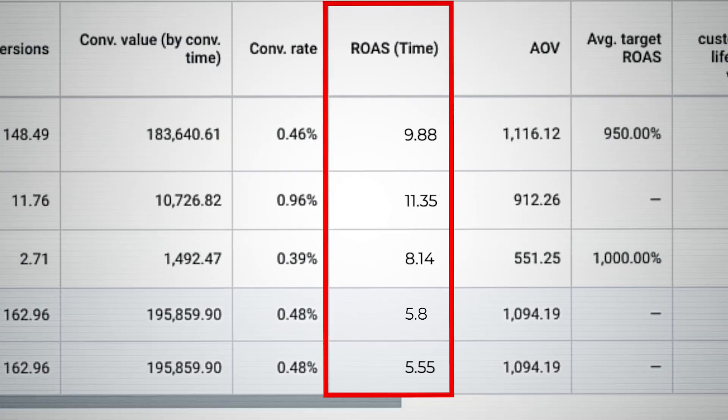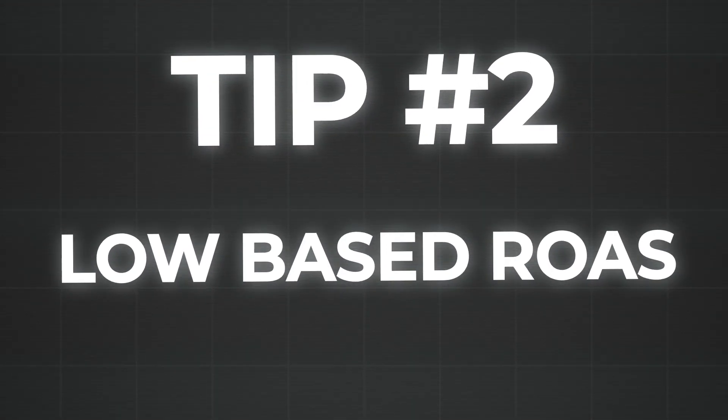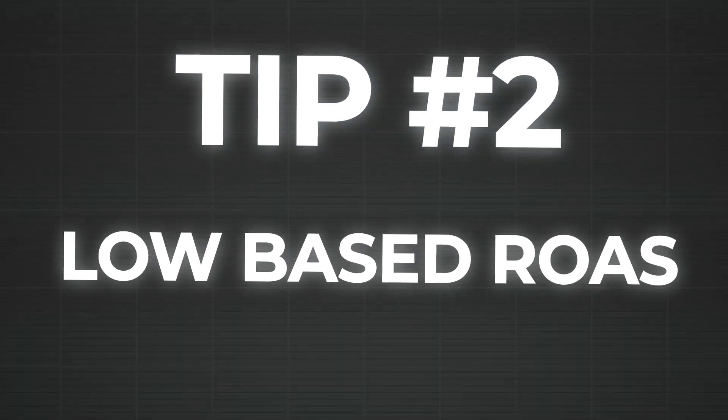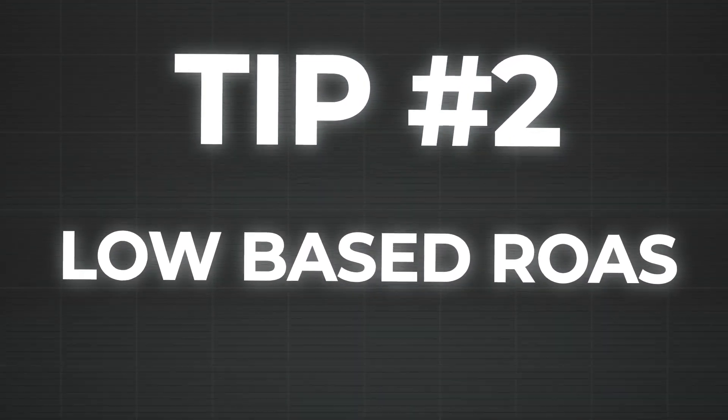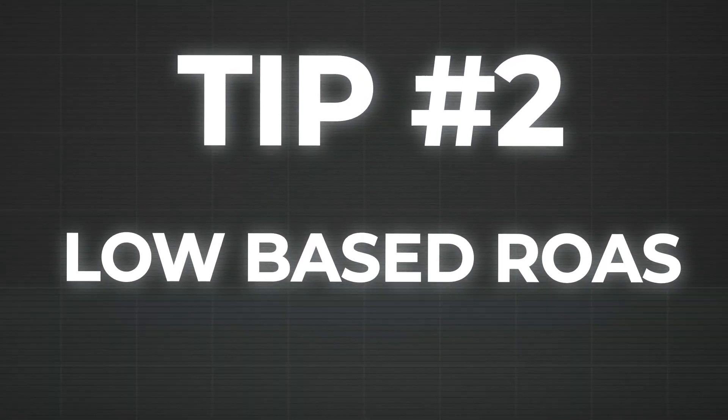This first tip is going to save you a lot of money and make things a lot more efficient, because your ROAS will be higher and as a result your campaigns will technically perform better. This brings me to tip two, which is settings for target ROAS or target CPA — it should be based on the lowest values for your business. Here's what I mean.